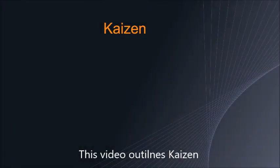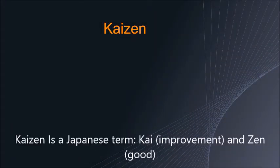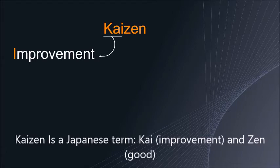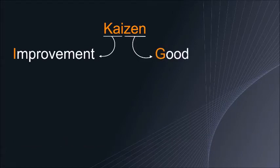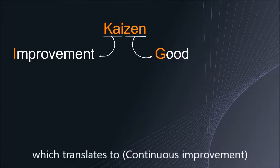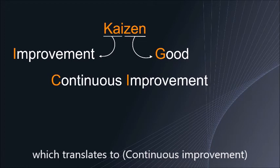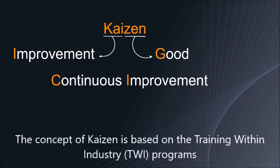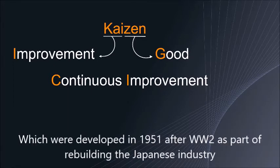This video outlines Kaizen. Kaizen is a Japanese term: 'kai' means improvement and 'zen' means good, which translates to continuous improvement. The concept of Kaizen is based on training within industry programs which were developed in 1951 after World War II.